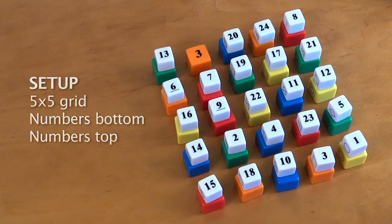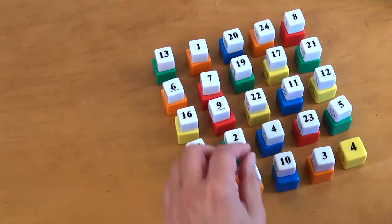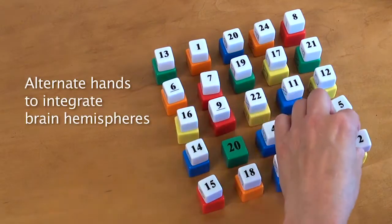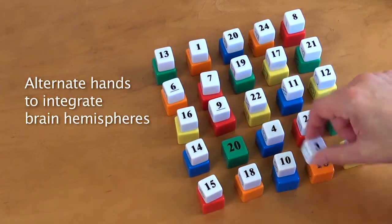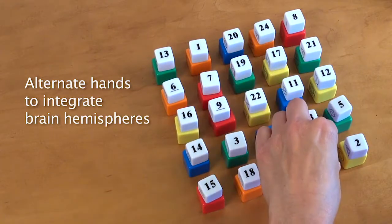We'll start by moving the numbers in order, which is good sequencing. The first brain load is we're switching between the left and right hands, which is great for brain hemisphere integration.